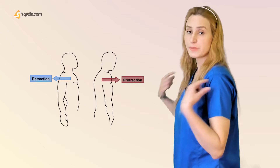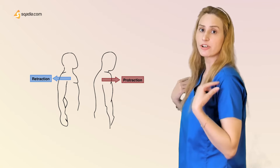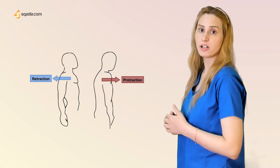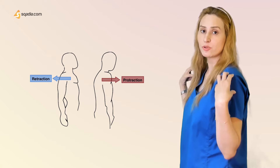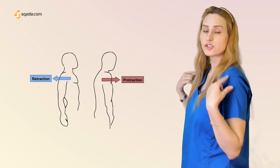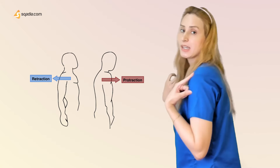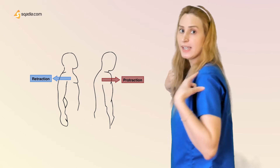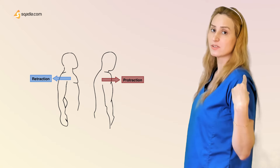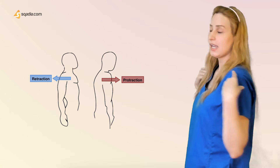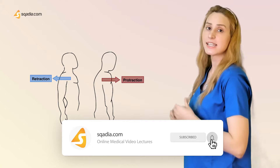Two more important movements taking place at the shoulder joint — and at the mandible as well — are protraction and retraction. When you move your shoulder forward, that is protraction. When you move your shoulder backwards, that is retraction. For the mandible, protraction is moving the jaw forward, and retraction is bringing it back to its place.